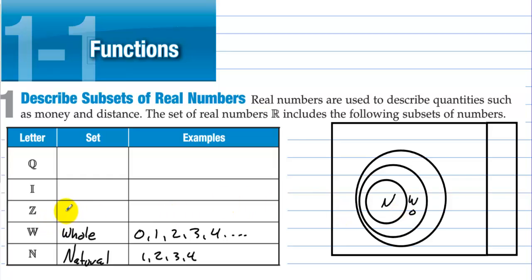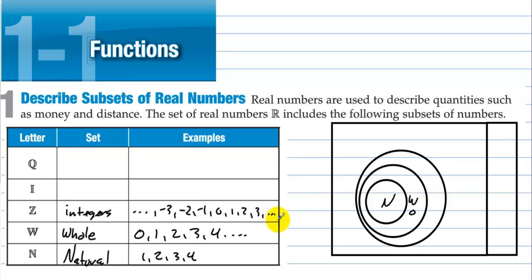Then we have the integers. Integers are the whole numbers and their opposites: negative three, negative two, negative one, zero, one, two, three, keep on going. So here we have the integers, which include all the naturals, all the wholes, and then we have the integers.